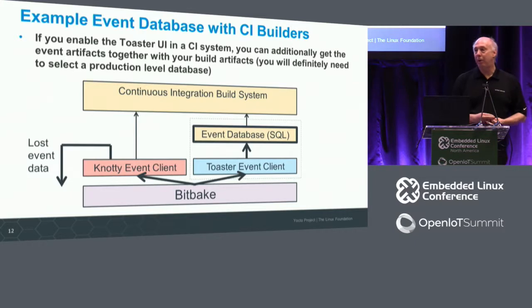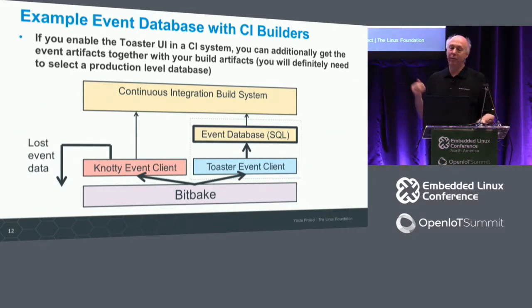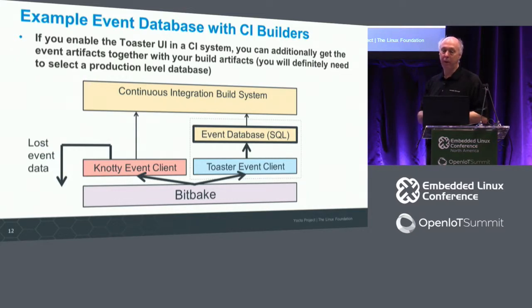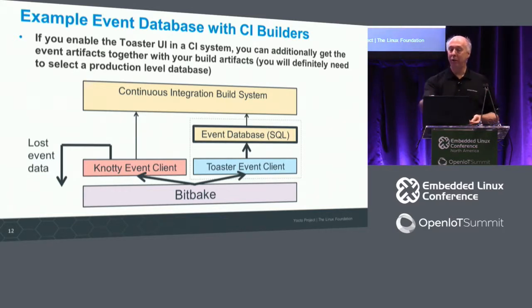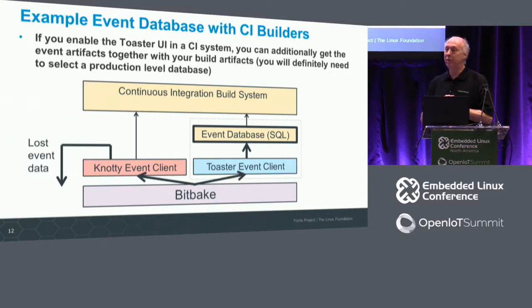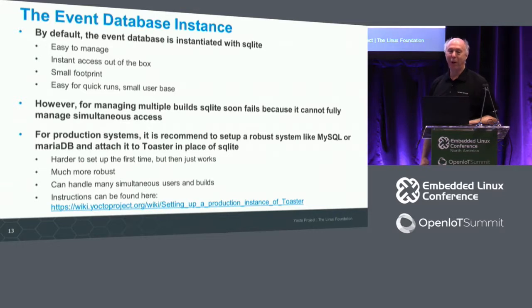It's easy to attach this to a continuous integration build system. Today, your CI system calls BitBake with Knotty as the event client and throws away most of the data - you get the important stuff like success or failure, artifacts, logs, but not everything that happened while building. All you need to do is instead of using Knotty 2 as your event client, use the Toaster event client to gather the data, put it into a database kept with your CI system. You can look at it now or later. Just swap one event client for the other.